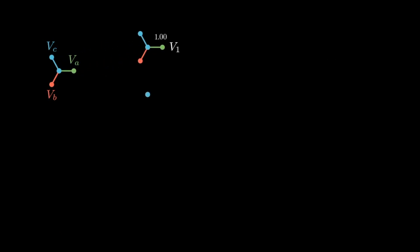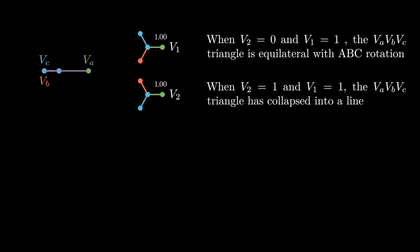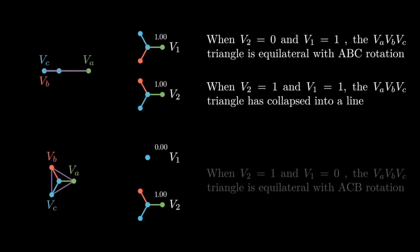Starting with a balanced ABC system with V1 equal to 1 and V2 equal to 0, slowly increasing the amount of ACB rotation will cause the original triangle to slowly collapse, eventually forming a line when the two rotations are equal. As the V1 component is reduced and the V2 component dominates, the original triangle develops an ACB rotation.